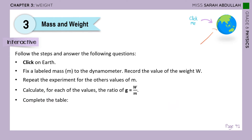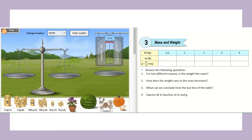Now click on the Earth icon to go to the simulation. This website will open — you have about five minutes to do the activity, or you can create an account for more time. We will fill this table: I have different masses and I need to find the weight for each mass, then calculate weight over mass. To find the weight, I'll use this dynamometer — this spring balance. The labeled masses are at the bottom. We start with 0.5 kilograms, which is the same as 500 grams.